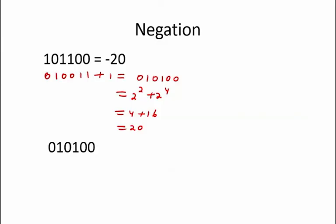The same methodology can be applied in reverse. If you start with a positive number 20, which equals 010100, and you flip all the bits and add 1, you get 101011 plus 1, which equals 101100. This brings us back to our original number, which is negative 20. So to easily determine the value of a negative 2's complement number, one flips all the bits and adds 1 to find the corresponding positive number, say x, which in turn means that your original negative number had a value of negative x.